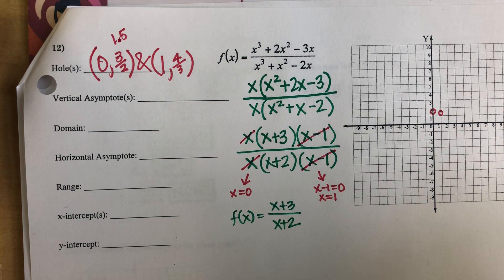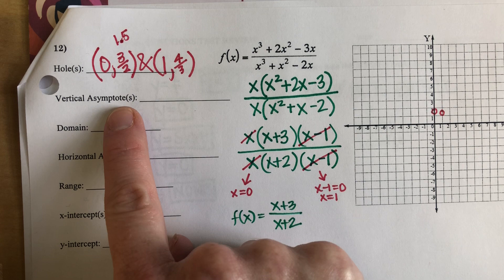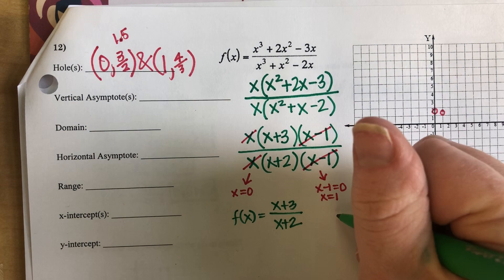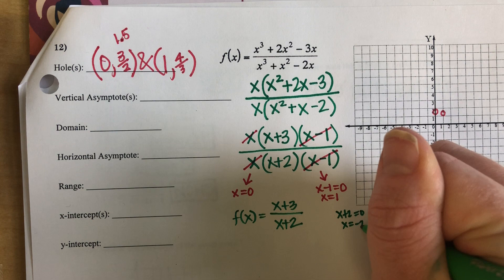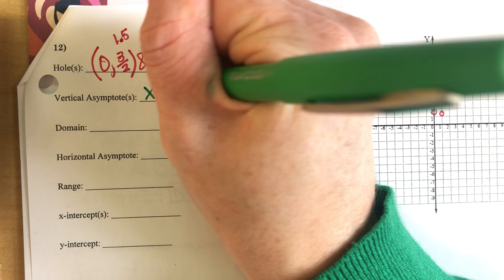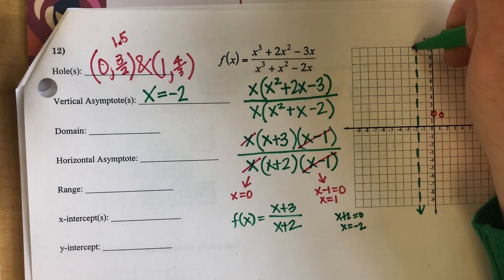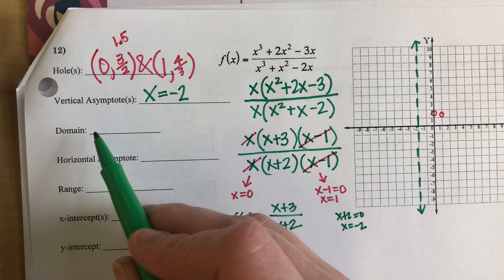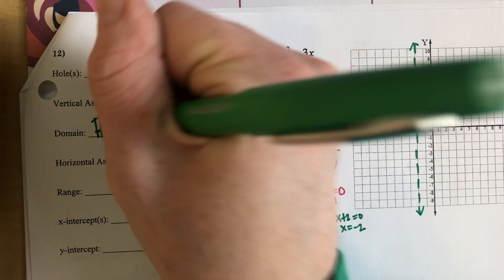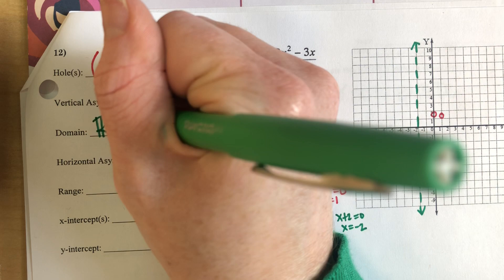Now my vertical asymptotes come from anything that's left over in the denominator. If I take X plus 2, which is my denominator, and set it equal to 0, that is going to give me my vertical asymptote at X equals negative 2. I'll come plot that on my coordinate plane. That vertical asymptote affects my domain — my X values are not allowed to equal negative 2.